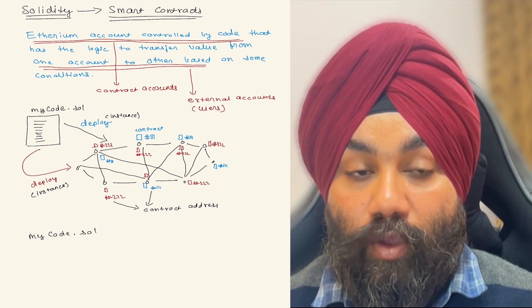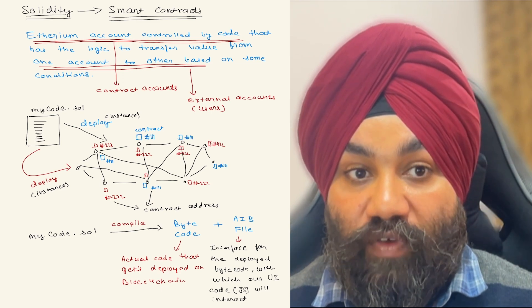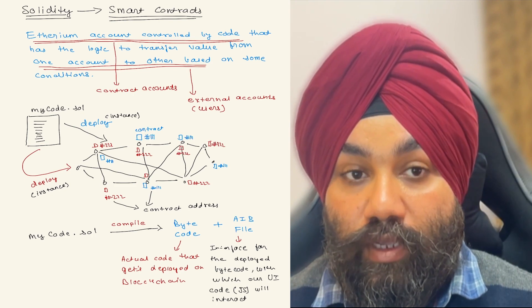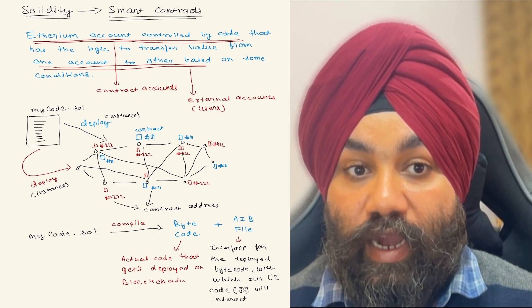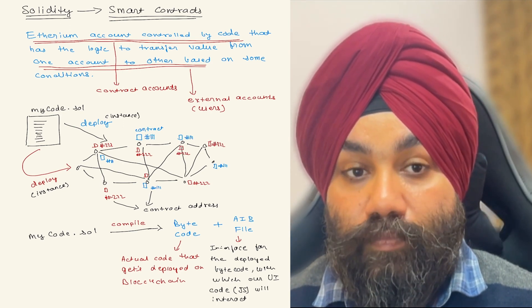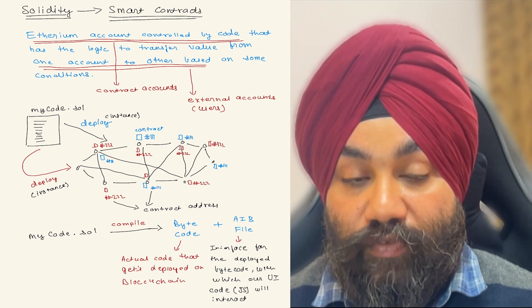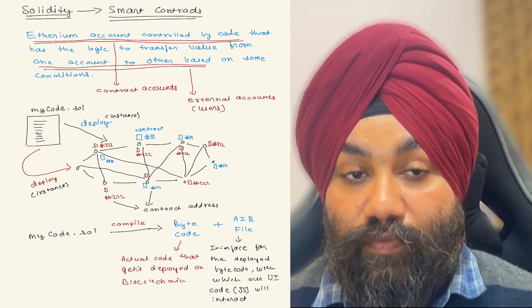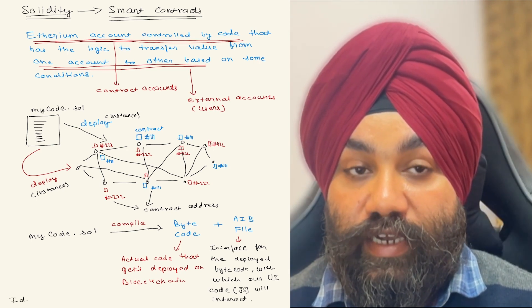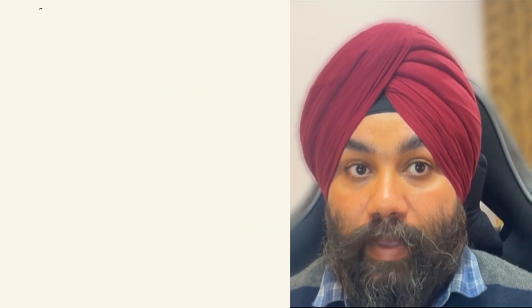When you compile your mycode.sol file it creates two types of output: bytecode and an ABI file. The bytecode is the actual code that gets deployed on the blockchain network. The ABI (Application Binary Interface) is an interface of the deployed bytecode that the end user or UI can integrate with — it gives an overview of the functions and data available in the smart contract.